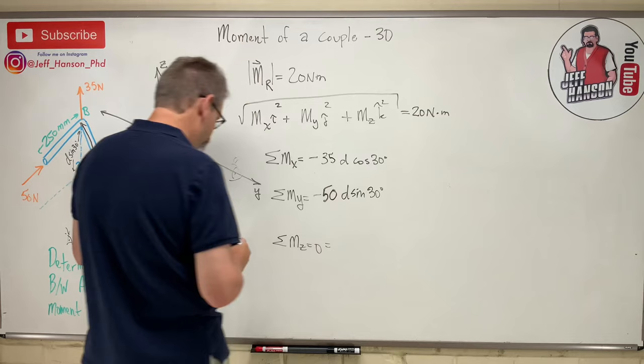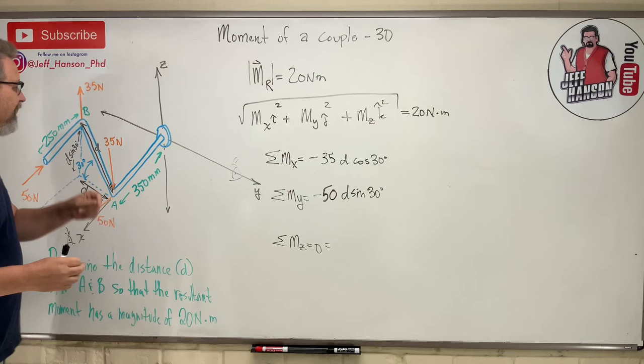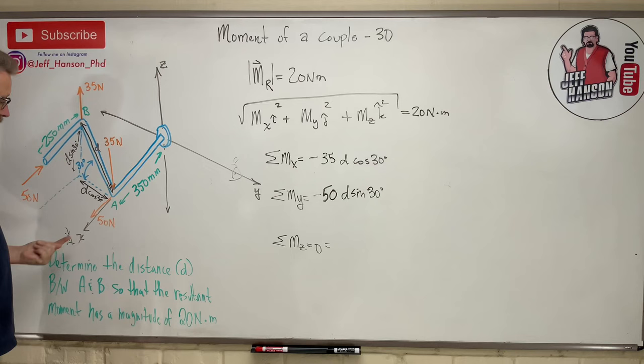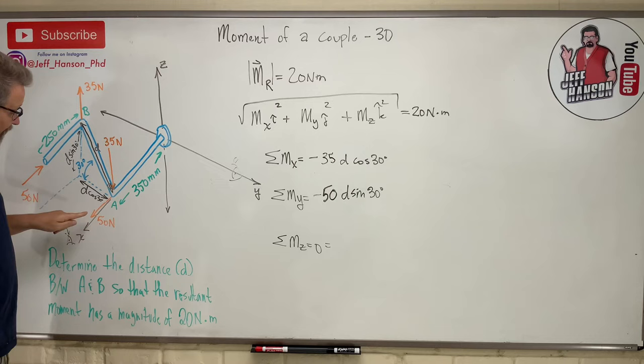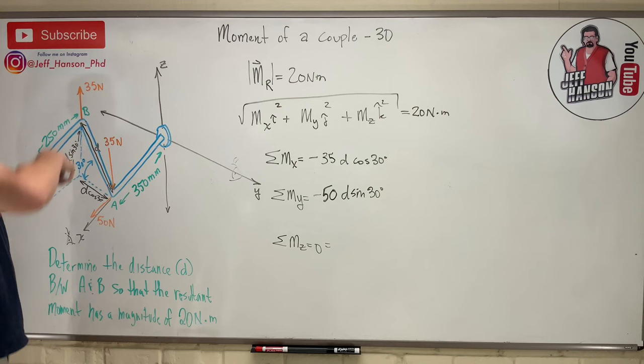What about that one? Yes, he's going to make it spin that way, right? And again, looking towards the origin, there's my eyeball. That's going to make me spin clockwise, right? So that 50 is going to be negative. All of them are negative.